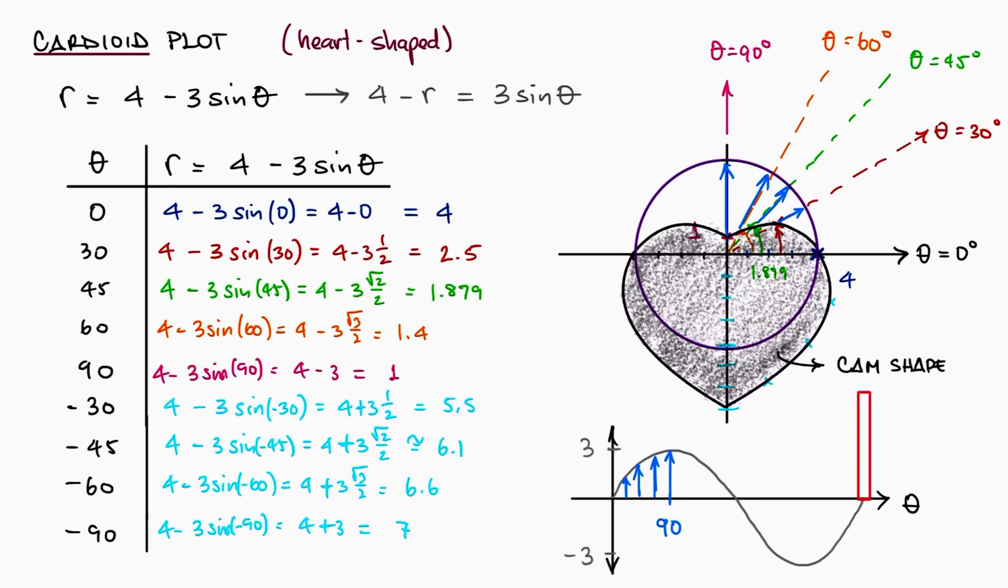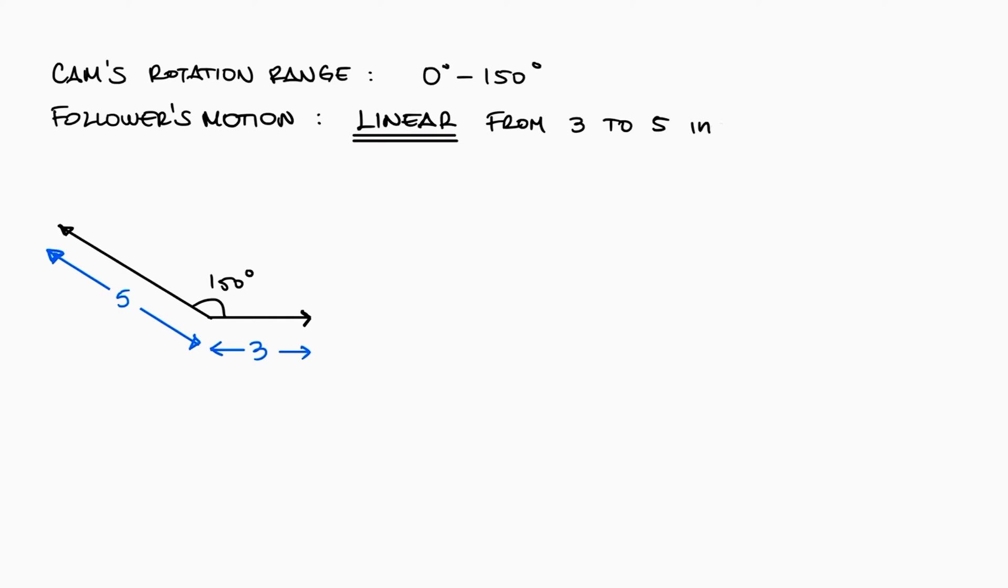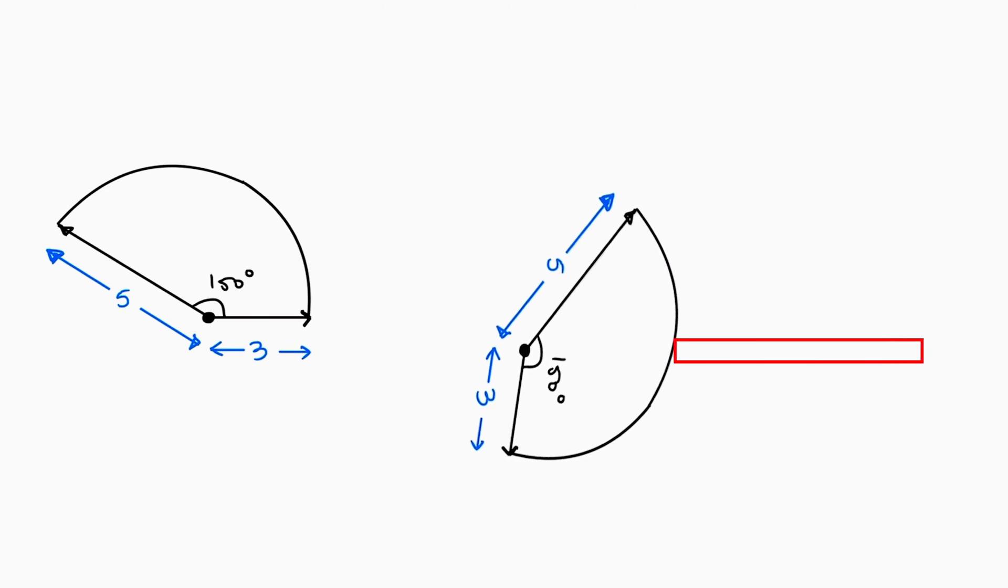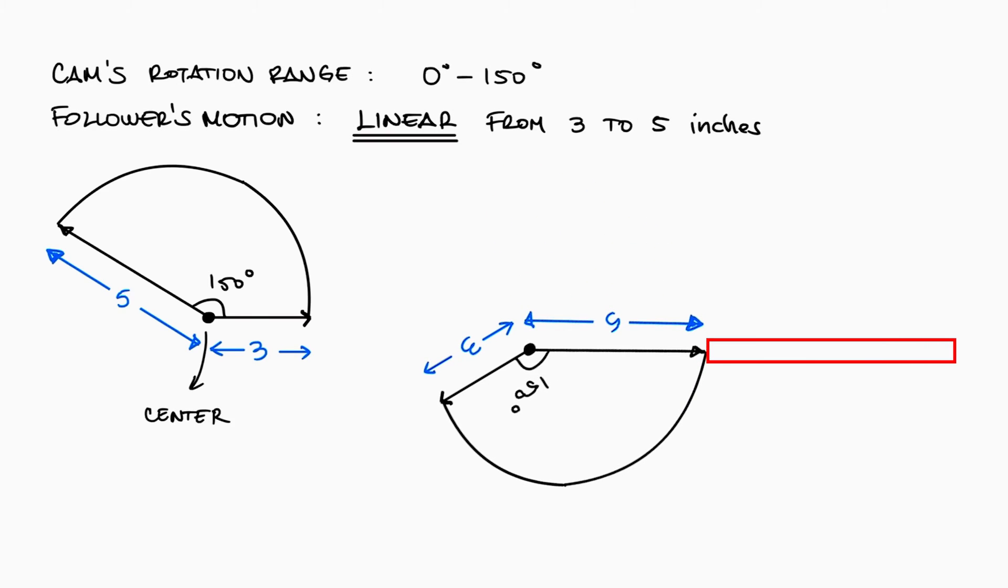But let's keep it simple for today's SolidWorks example. Let's say our rotating element is only gonna rotate 150 degrees, and we just want our follower to move linearly from 3 inches to 5 inches away from the center of rotation. This means that the rotating element will have a radius of 3 inches at 0 degrees, and 5 inches at 150 degrees, so that when it rotates, the follower is being pushed from 3 to 5 inches away from the center.